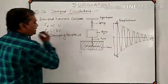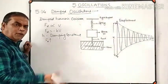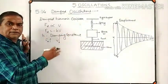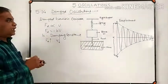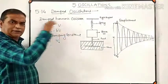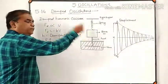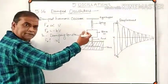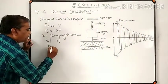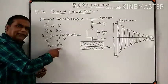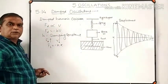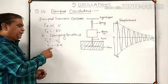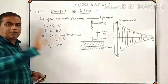The second force is the restoring force exerted by the spring on the block, given by F_x = −kx, where k is the spring constant. The negative sign indicates that the force and displacement are oppositely directed. The third force is the weight of the block, Mg, acting downward. However, the weight is negligible in comparison with the damping force and the spring force.